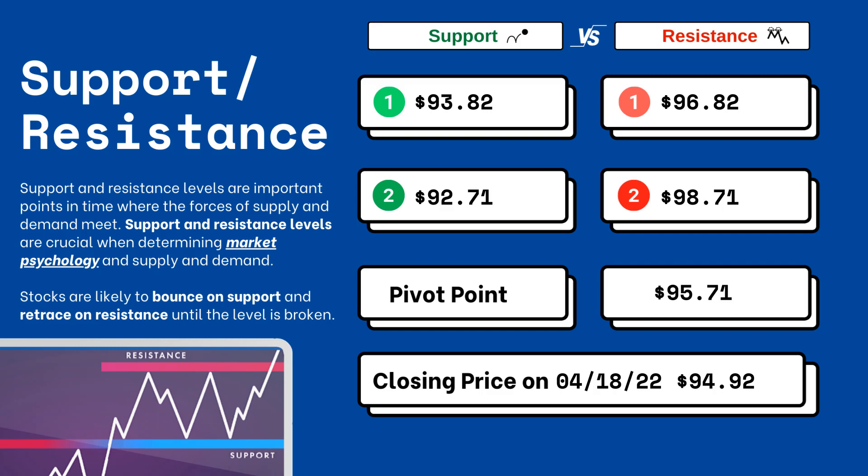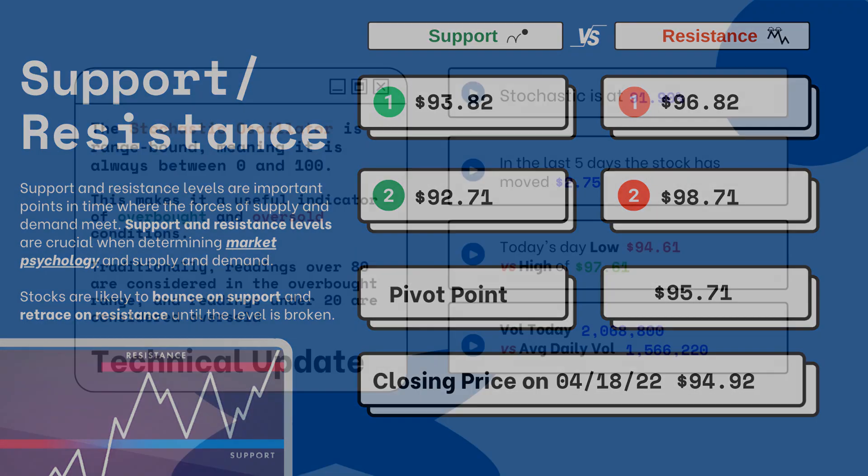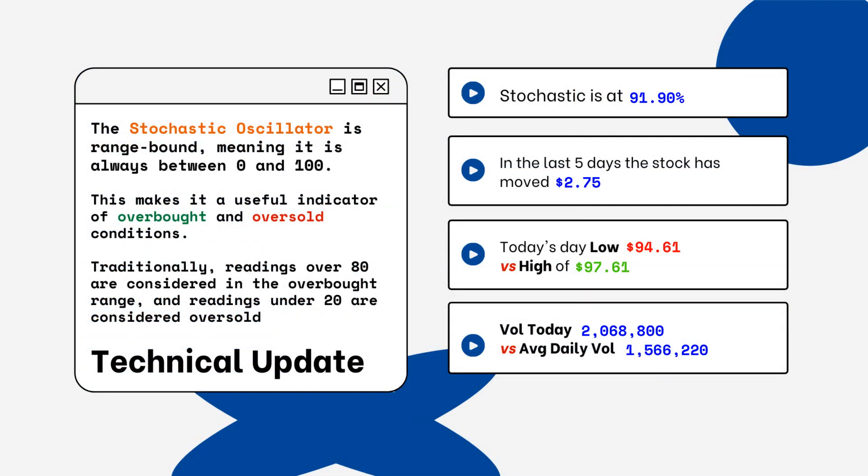These are areas that you want to watch when looking at this particular stock. Stocks typically bounce at support levels and resist at resistance levels, meaning they'll retrace from that top level. You can see on the right side where the stochastic level is on this particular stock. This is only a technical update.